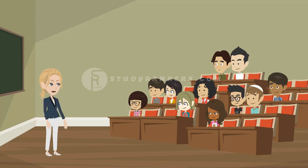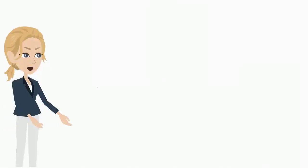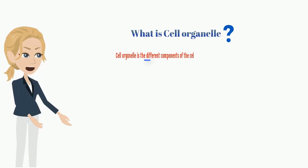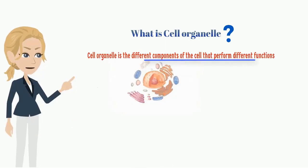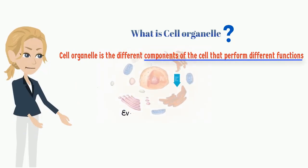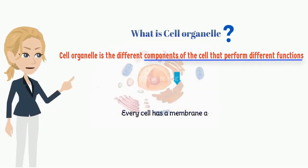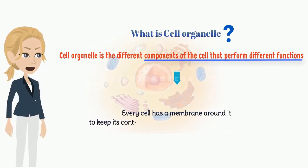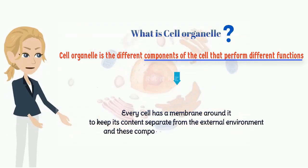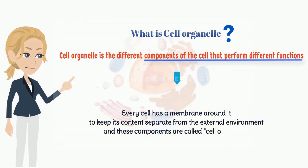We always talk about different types of cell organelles. Today, let's start with it. First, we will know what a cell organelle is. A cell organelle is the different components of the cell that perform different functions. Every cell has a membrane around it to keep its contents separate from the external environment, and these components are called cell organelles.